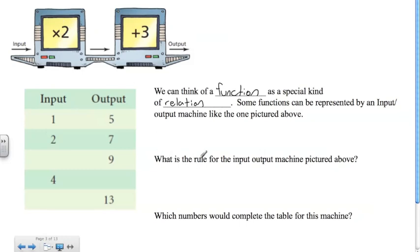What is the rule for the input-output machine pictured above? The rule is: for whatever number we're putting in, we multiply it by two and then add three.